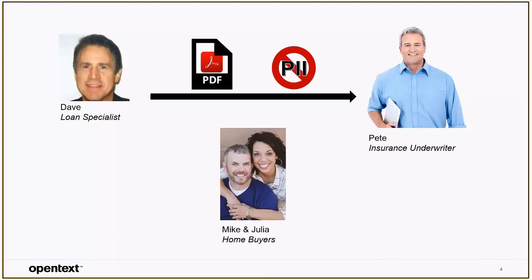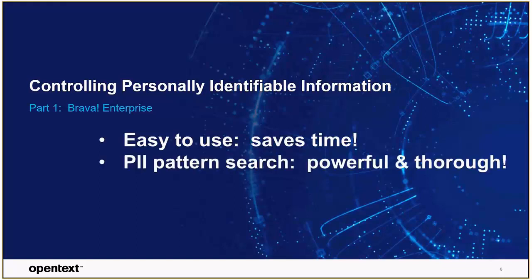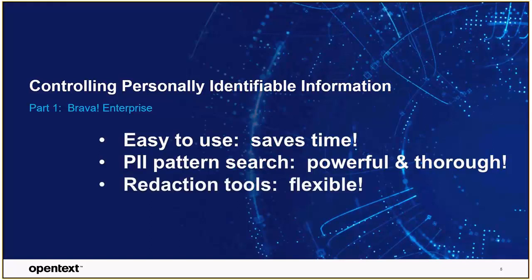Brava has given me the confidence that I'm adhering to my organization's compliance policy. I've got a PDF that I can send to Pete, and I know that the PII has been safely and securely removed. I just showed you how easy those redaction tools were to use and how much time they're going to save me. With just a few clicks, I was able to find and redact common PII data types like social security numbers and credit card numbers, and I was also able to use the easy-to-use redact area tool for things like signatures or the bank account portion of the page.